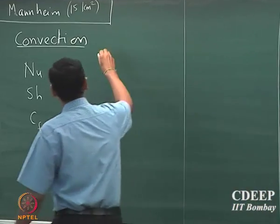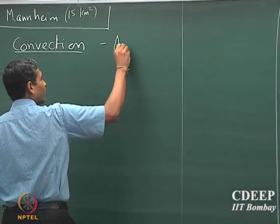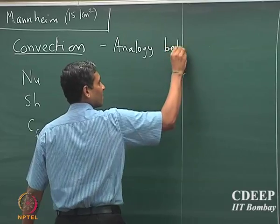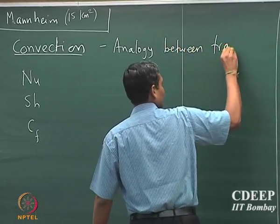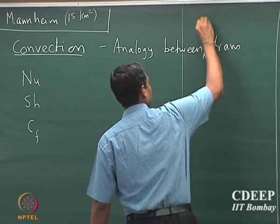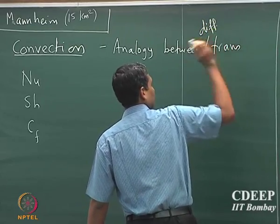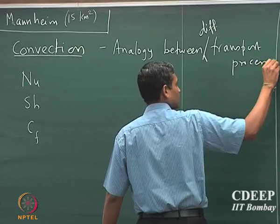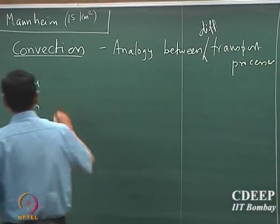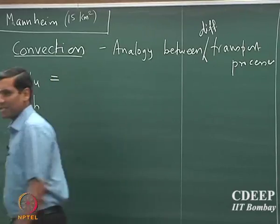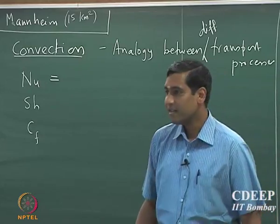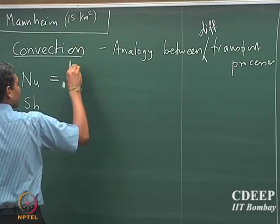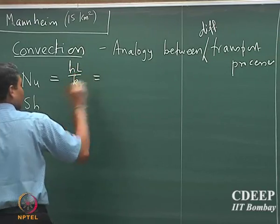We have been discussing the analogy between different transport processes. Let us define Nusselt number. Has anyone remembered? Yes — HL by K.